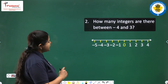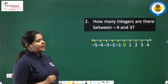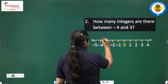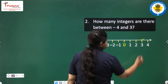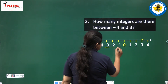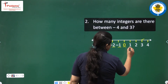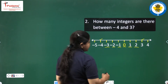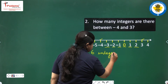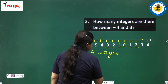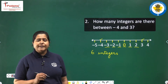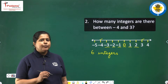Next question: how many integers are there between minus 4 and 3? Let us mark them — this is minus 4 and this is 3. The numbers in between are 1, 2, 3, 4, 5, and 6. There are 6 integers in between, so they are countable. There are a finite number of integers between any two integers.